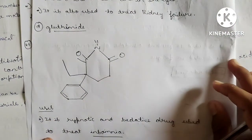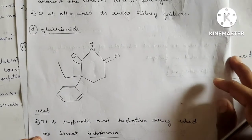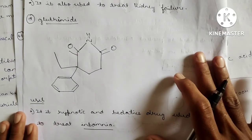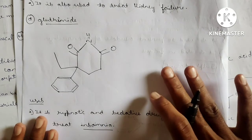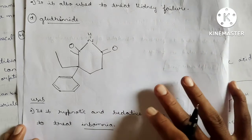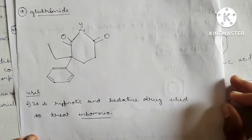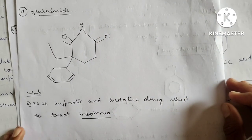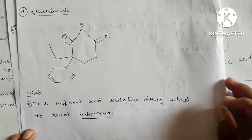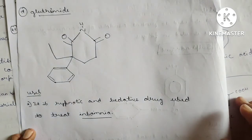All these structures with answers will be available in the question-and-answer booklet uploaded in the description — go and download that. Glutethimide is a hypnotic and sedative drug used to treat insomnia. Sometimes they will ask 'write a note on sedative and hypnotic drugs' — at that time write this glutethimide structure and uses.